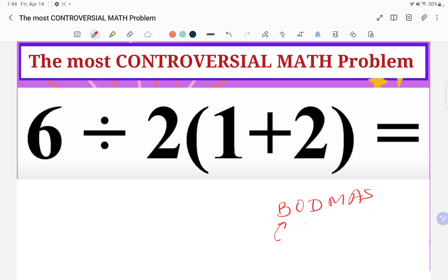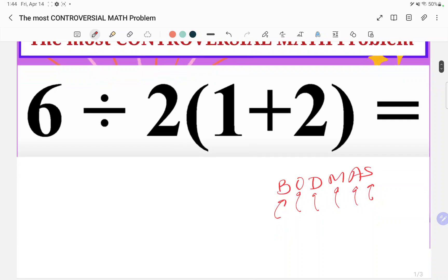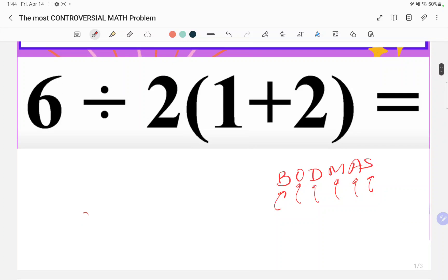It means bracket, of division, multiplication, addition, and subtraction, right? So here, if we follow this, then this is 6 divided 2. Now we have to use this bracket, right? So inside your bracket, you have 1 plus 2, which is 3. So bracket work would be 1 plus 2, that's 3.